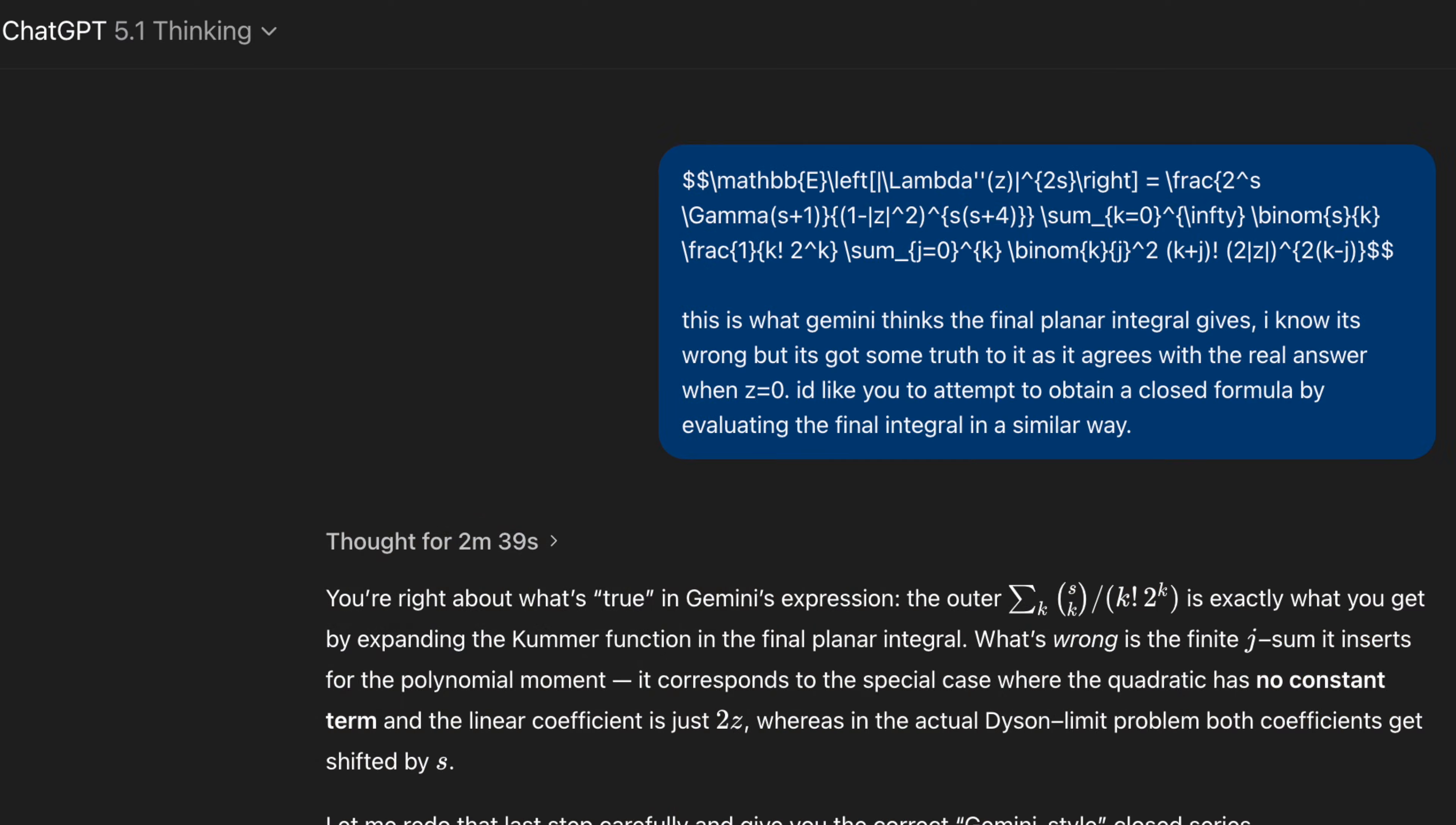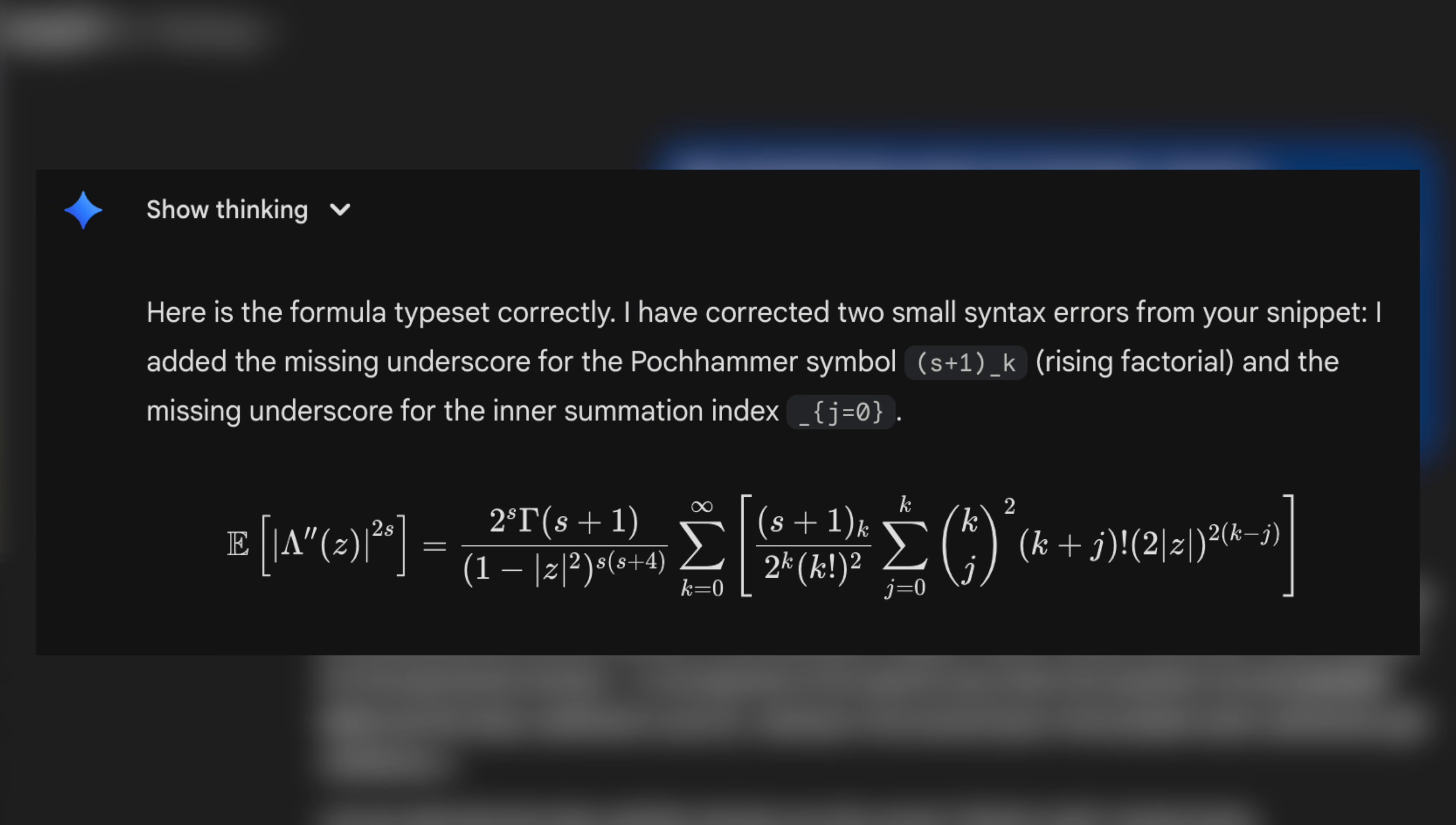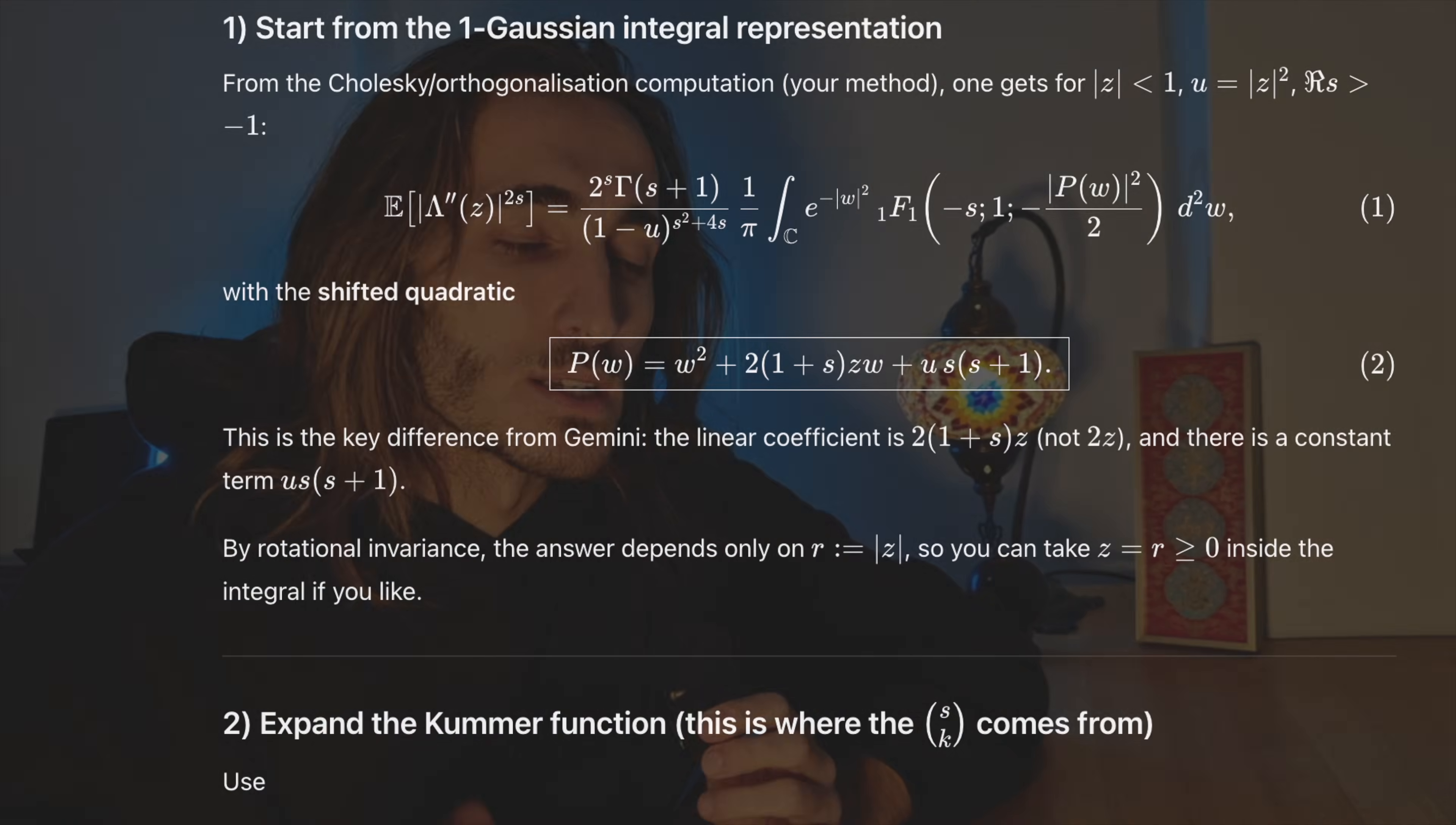Okay, so I've actually had a review of all of the notes, and I had the clankers team up on this one. So instead of having them battle out, I actually gave Gemini's response to ChatGPT to see if ChatGPT could then work on that response to give a better answer. So what did we do? Well, I gave ChatGPT the same equation that Gemini had, and I said this is what Gemini gives for the final planar integral. I know that it's wrong, but it has some truth to it because it agrees that z is zero. Could you obtain a closed formula by doing that last integral yourself?